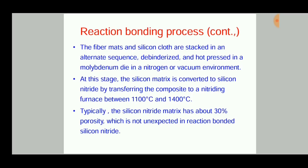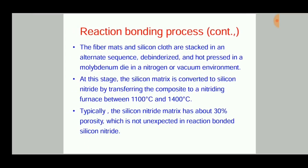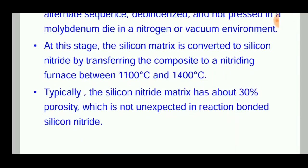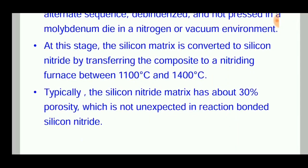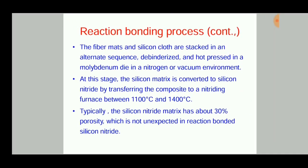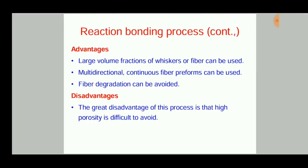The stack is then binder-removed and hot-pressed in a molybdenum die in a nitrogen or vacuum environment. At this stage, the silicon matrix is converted to silicon nitride by transferring the composite to a nitriding furnace at 1100 to 1400 degrees Celsius. Typically, the silicon nitride matrix has about 30 percent porosity, which is not unexpected in reaction bonded silicon nitride.